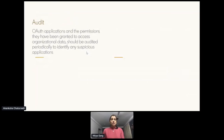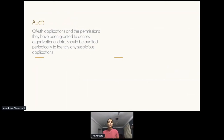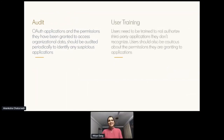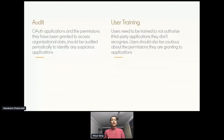Another proactive measure is frequent auditing of OAuth applications. Administrators should perform an audit of all OAuth applications and the permissions they are granted to access organizational data. This should be done extensively on all applications to establish a baseline. Any new or updated application should be periodically audited, and suspicious applications should be investigated and removed. Last but most important is user training — users need to be trained not to authorize third-party applications they do not recognize. Users should pay particular attention to redirect URLs; if the URL is misspelled or contains a sequence of words related to an expected service, the website is likely trying to spoof a legitimate service.